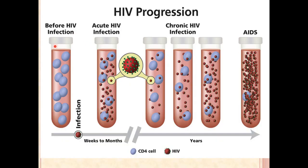In acute HIV infection, from 2 weeks to 3 months, there is a high viral load. After that, in the chronic phase, the viral load is lower but if untreated, it progresses to AIDS, where CD4 cells may fall below 50 cells and the viral load is markedly elevated.